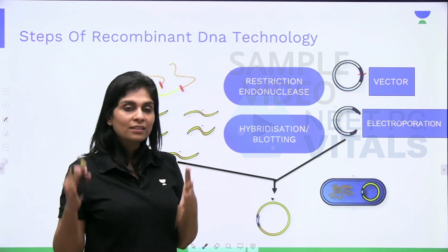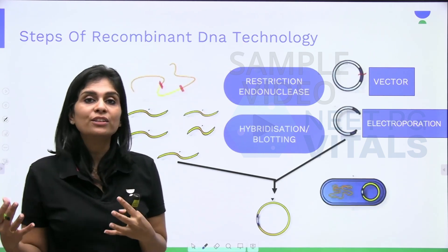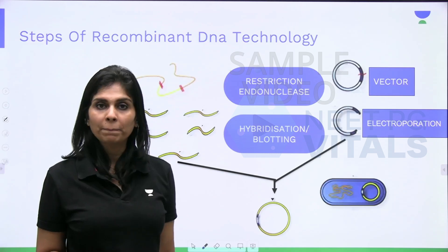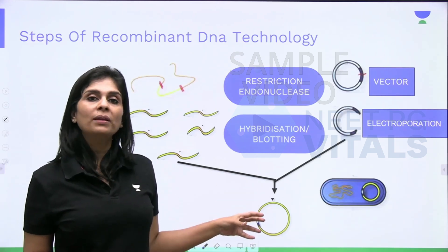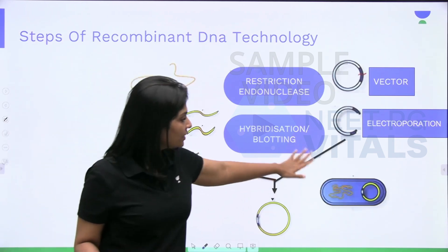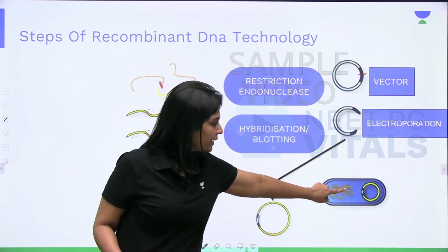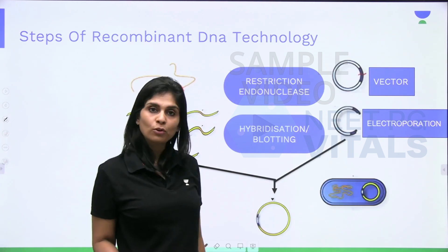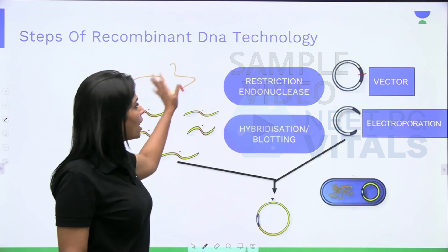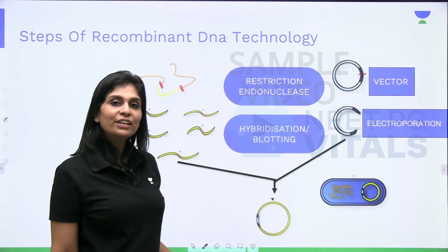Electroporation is considered the rate-limiting step of recombinant DNA technology because the ultimate success — the number of products you get — depends on how successfully you have introduced the recombinant vector into E. coli. Once you're done with this step, E. coli takes care of the rest: whenever the vector replicates you get multiple copies, and whenever the cell divides you also get multiple copies. That is an outline of the steps involved in recombinant DNA technology.